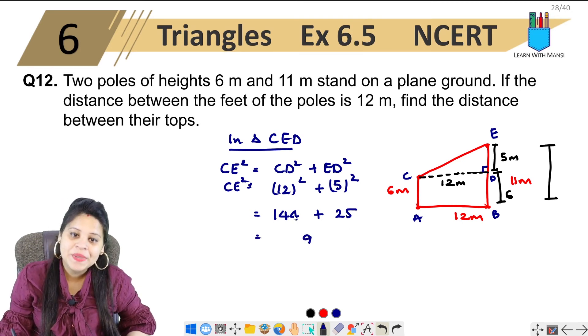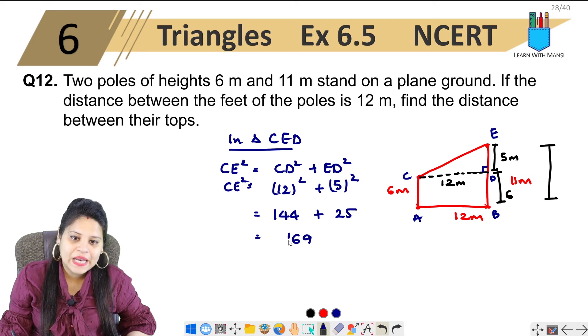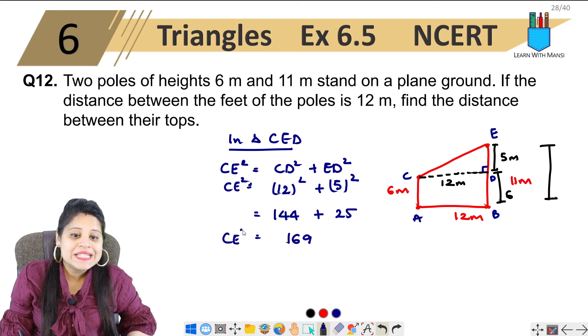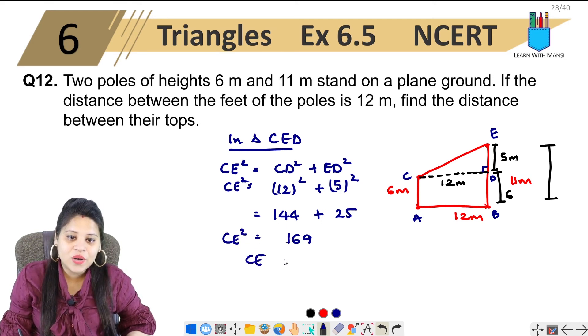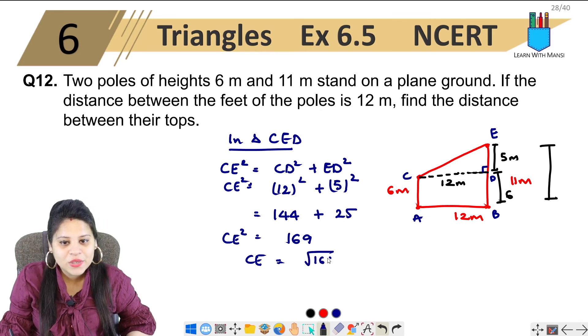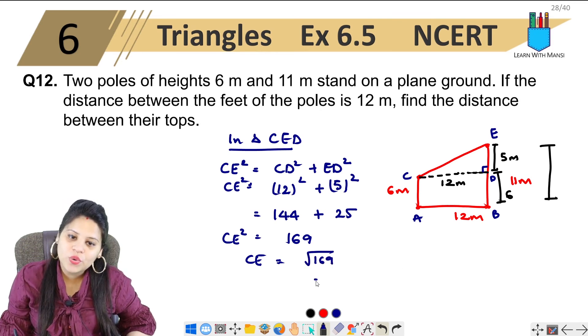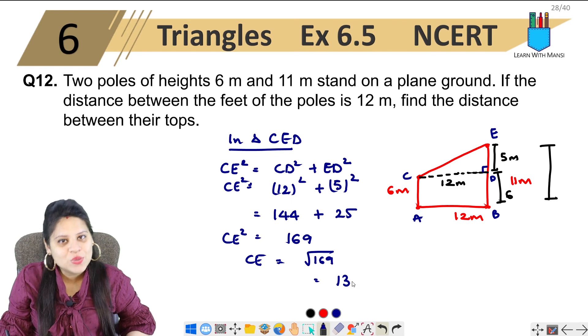We add 144 and 25. 5, 6, 7, 8, 9. Then 4, 5, 6 and 1. So, this is CE square. We need to find this. It will come to 169 under root. Now, we know that 169 is 13 square. Therefore, our CE is 13 meters.